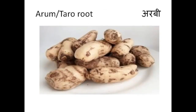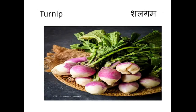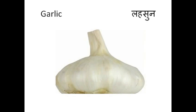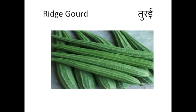Arum or taro root means arbi. Turnip means shalgam. Carrot means gajar. Garlic means lehsun. Ridge gourd — this is also known as loofa — this is turai.